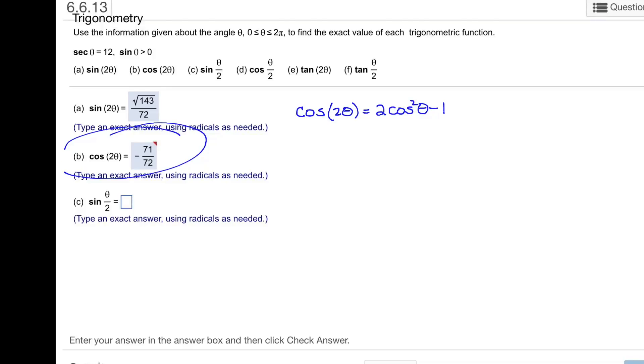In this problem, we need to find the cosine of 2 theta, and I'm going to use the formula cosine 2 theta equals 2 cosine squared theta minus 1.